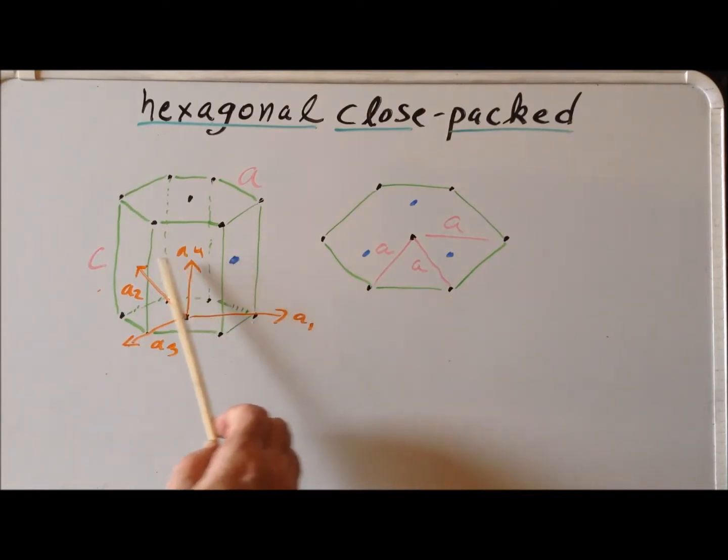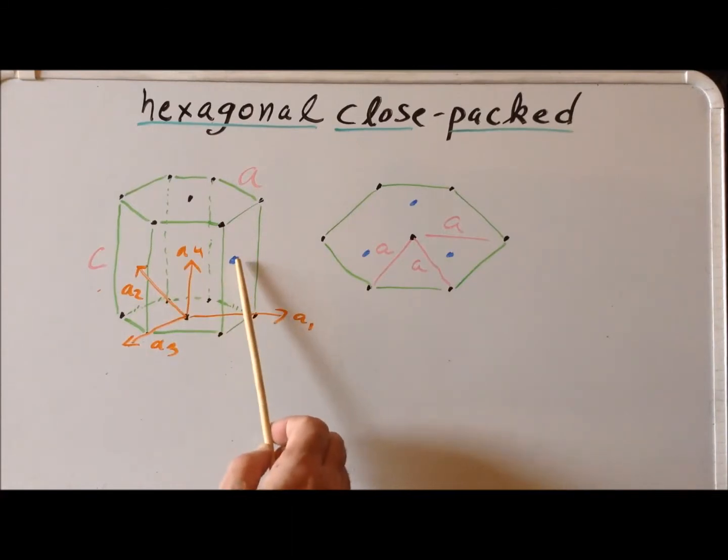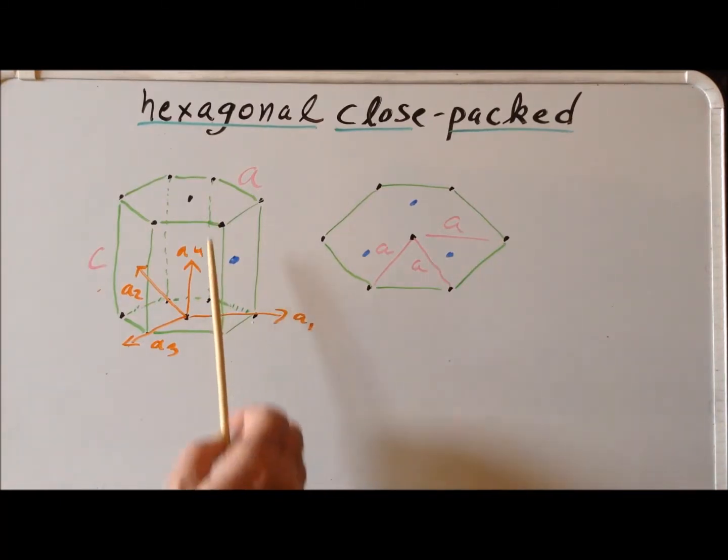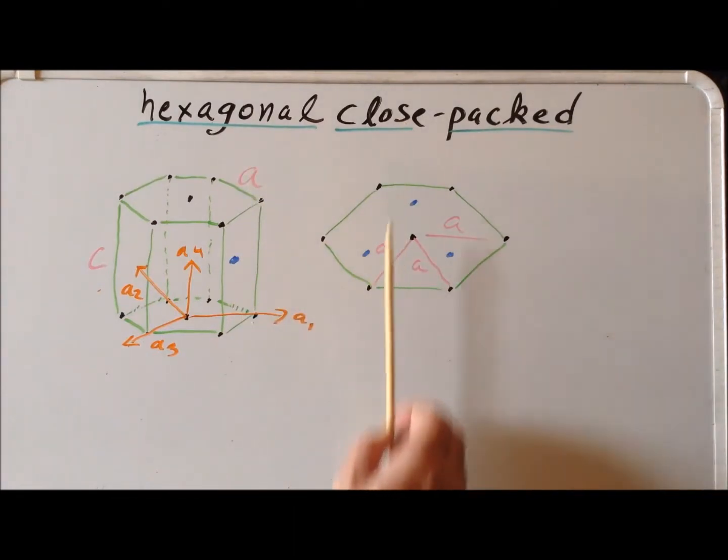Then the next layer, slightly different position, is the B layer. And then the next layer above that is directly over the first layer A. So we have capital A, capital B, capital A, capital B system.